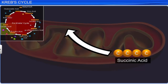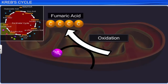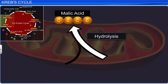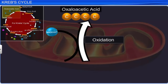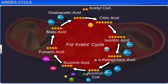The succinic acid formed is oxidized to fumaric acid with the reduction of FAD+ to FADH2. The fumaric acid is hydrolyzed to malic acid, which is then oxidized to oxaloacetic acid with the reduction of NAD+ to NADH+ H+. For Krebs cycle to run continuously, oxaloacetic acid, NAD+, and FAD+ need to be regenerated.